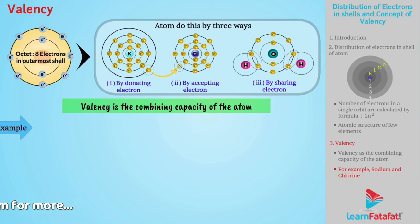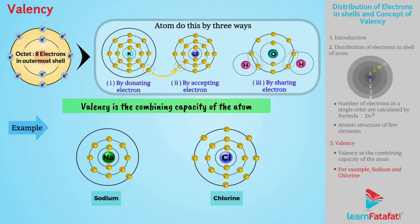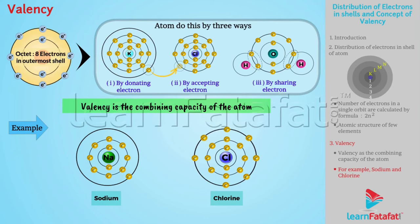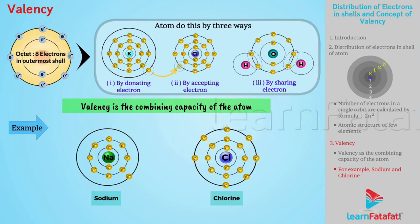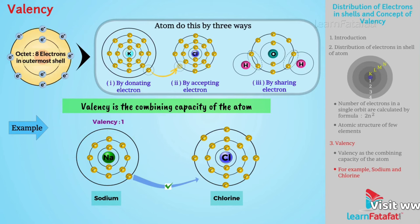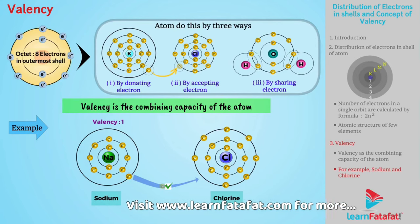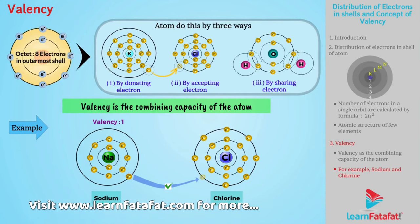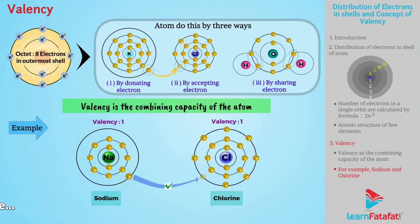For example, sodium has 1 electron in its outermost shell and chlorine has 7 electrons in its outermost shell. For sodium, it is very easy to lose 1 electron rather than accepting 7 more electrons to gain stability. Hence, the valency of sodium is 1 and not 7. For chlorine, it is easy to accept 1 electron rather than losing 7 electrons. Hence, the valency of chlorine is 1 and not 7.